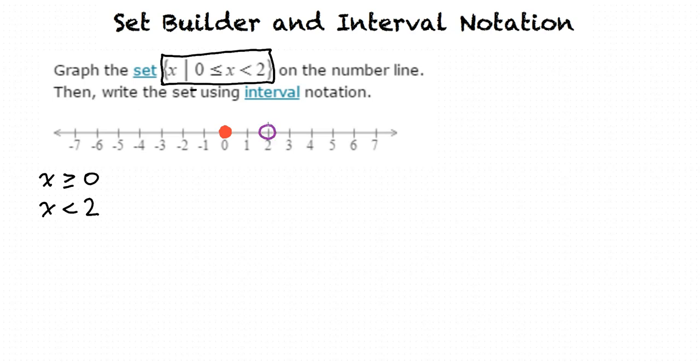So we plot 2 with an open circle to show that it is not included. If we want values greater than 0, then we highlight to the right of 0, and we keep left of 2, because we are less than it. Basically, everything is highlighted between 0 and 2.